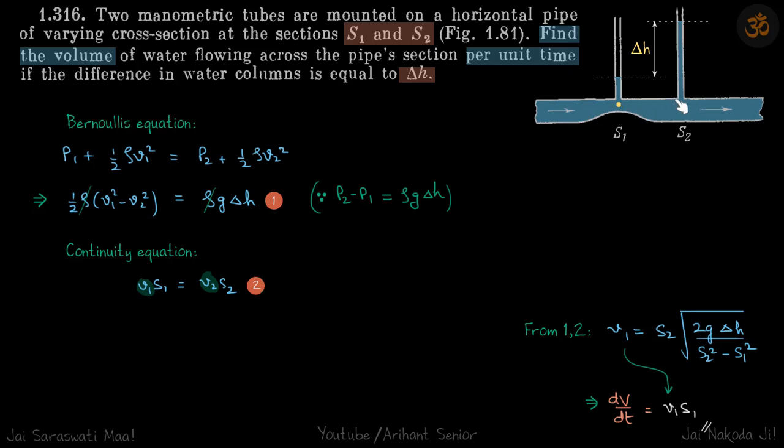Now the second will be the continuity equation. Volume flow rate is the same at both points. So v1 s1, that is the volume flow rate at this point, is equal to v2 s2, the volume flow rate at this point.